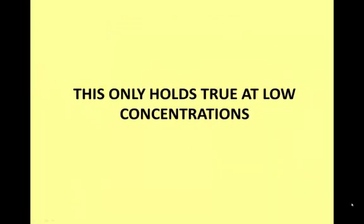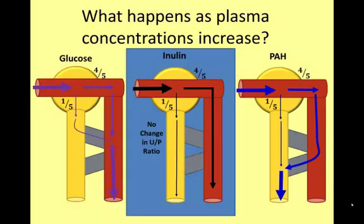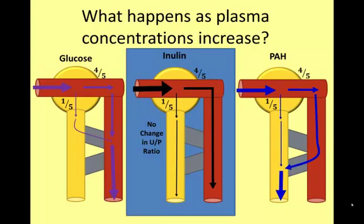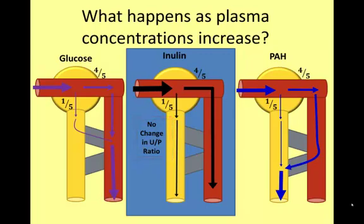What happens when concentration levels within the plasma increase? As the plasma concentration of inulin increases, the filtered and non-filtered components increase in the same proportion. Thus, the fraction of inulin in the urine and plasma does not change, and the clearance of inulin is independent of its plasma concentration.